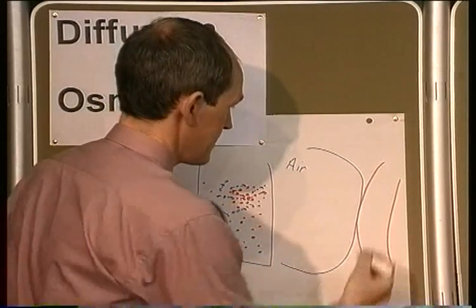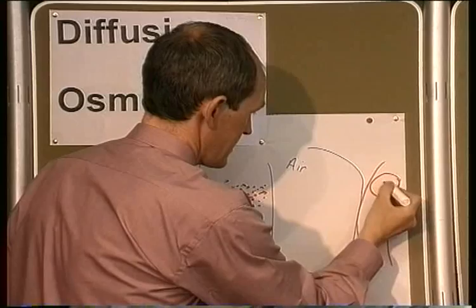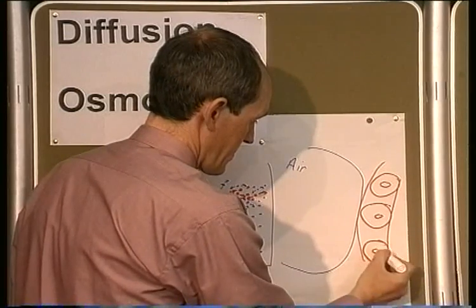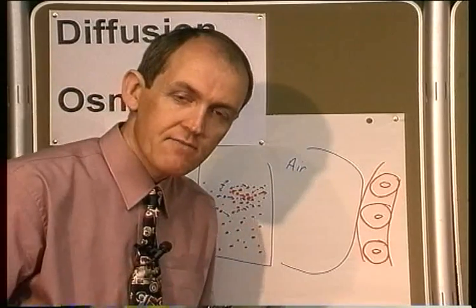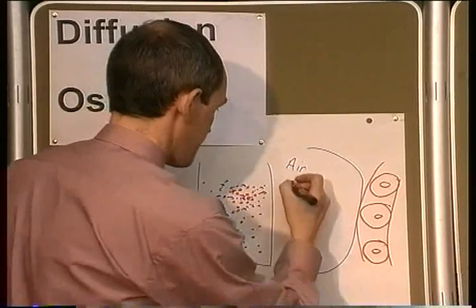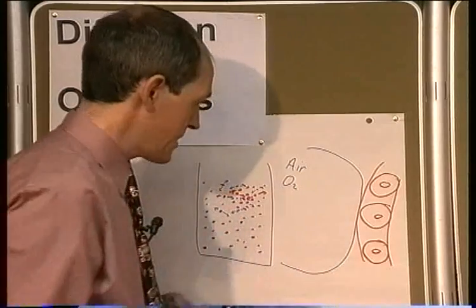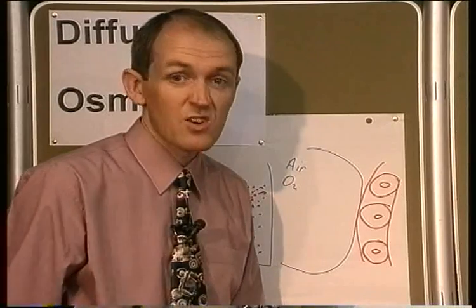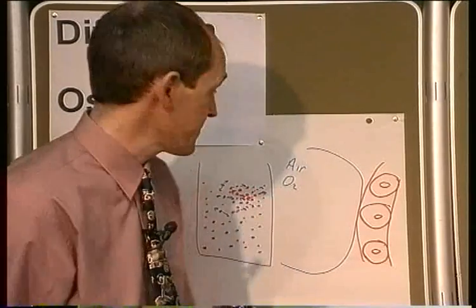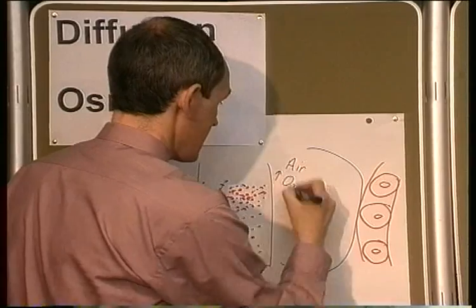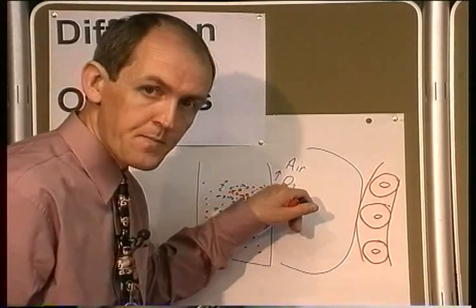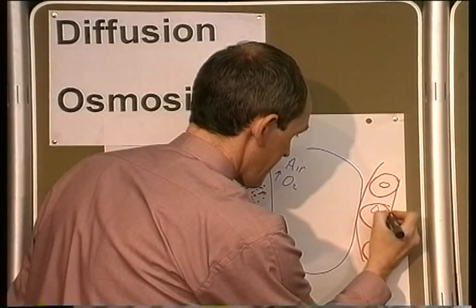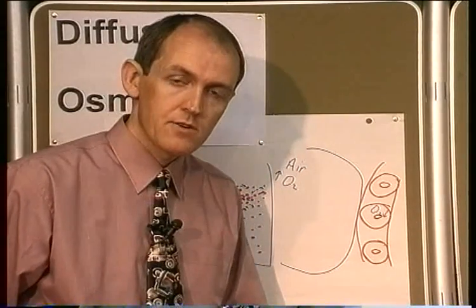The blood in the red cells is in the capillary. The air in the alveoli is relatively high in O2. The blood delivered in the pulmonary artery to the lungs is relatively low in O2 — that's the whole reason it's going there, to pick up some oxygen. So you have fairly high levels of O2 in the alveoli, but fairly low levels of O2 in the pulmonary arterial blood.